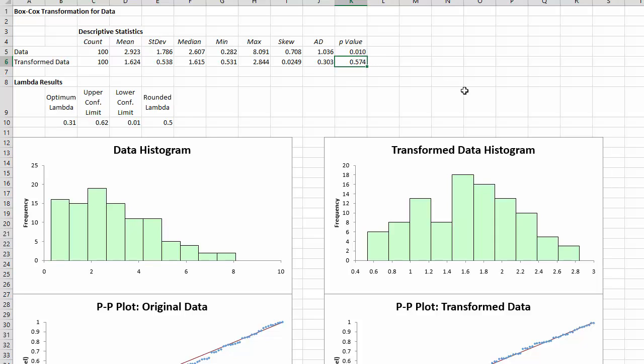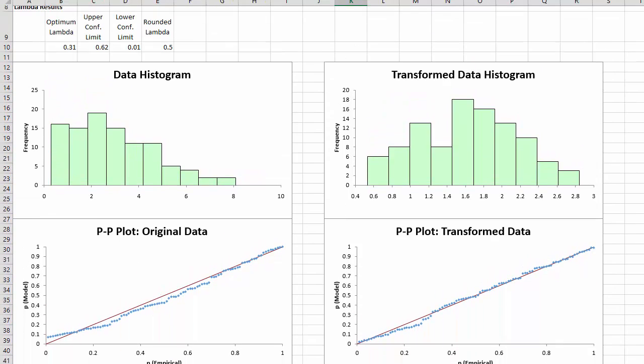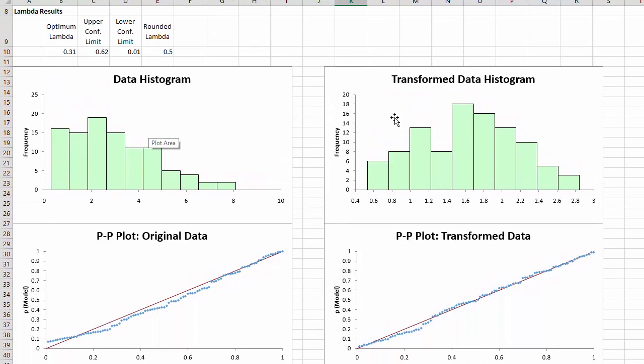Transformed data, on the other hand, has a p-value of 0.574, which implies it may well follow a normal distribution. You come down below, you can see that we have the two histograms for the original data and the transformed data. And you can easily see that the original data is not normally distributed, while the transformed data appears to be more normally distributed.